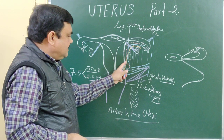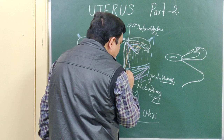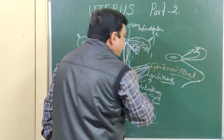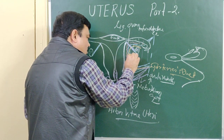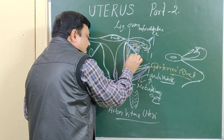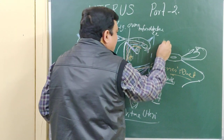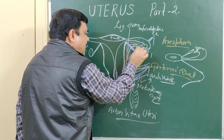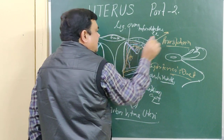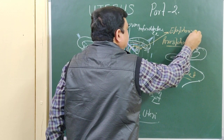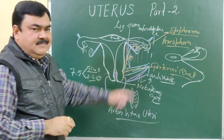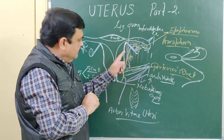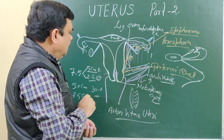Sometimes the duct persists as a remnant of the mesonephric duct, known as Gartner's duct. Small tubules associated with this remnant are known as epoophoron. These structures are also contents of the broad ligament, which additionally contains fatty tissue.